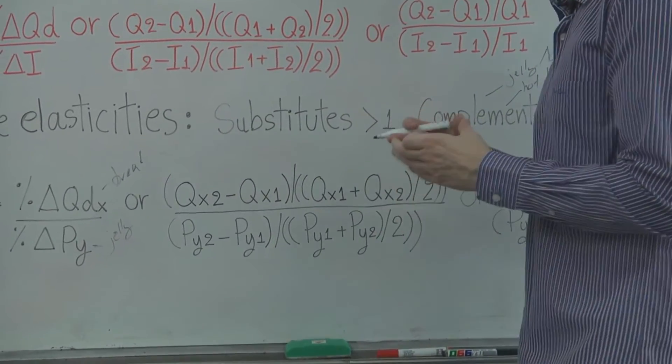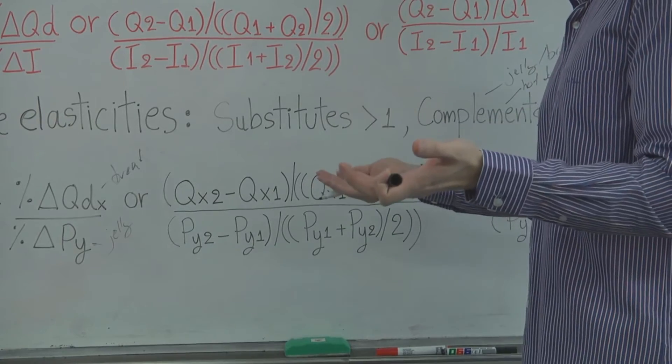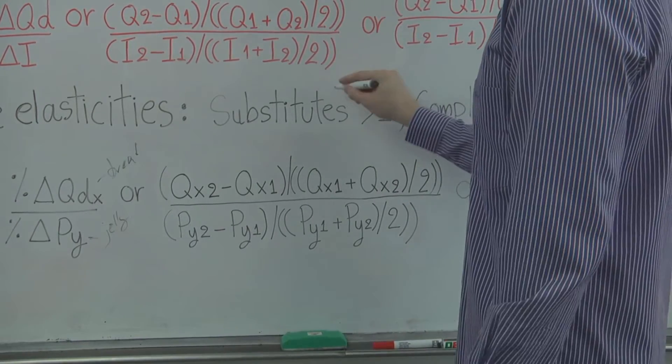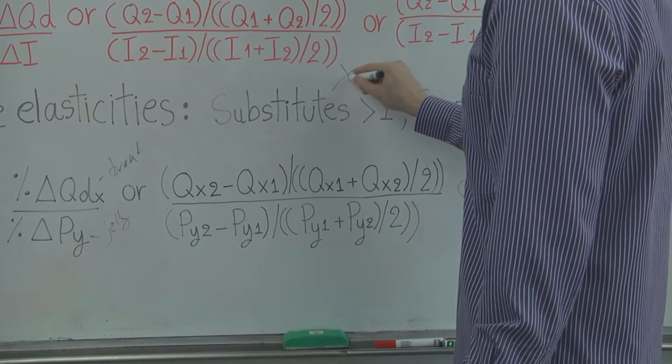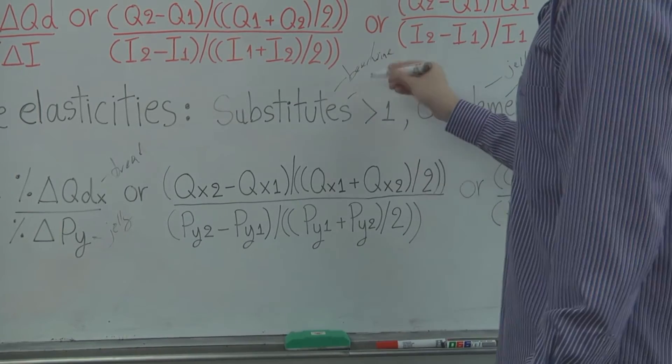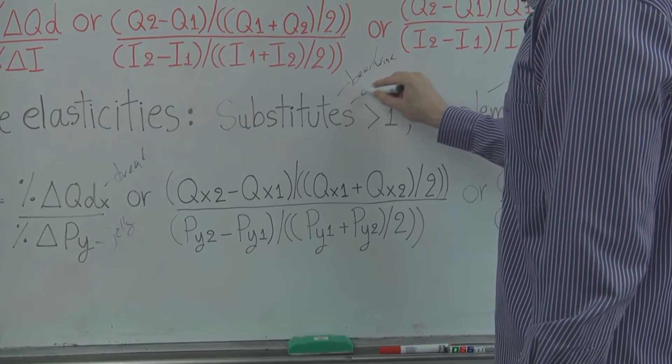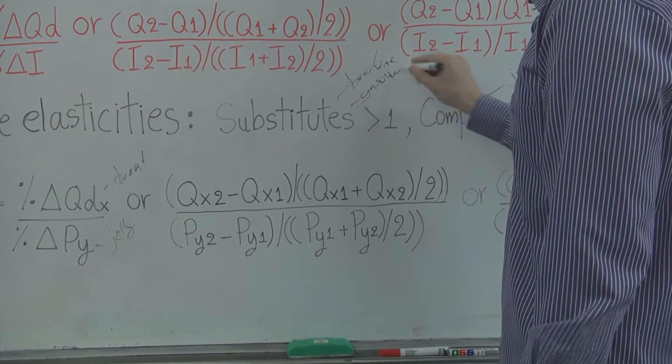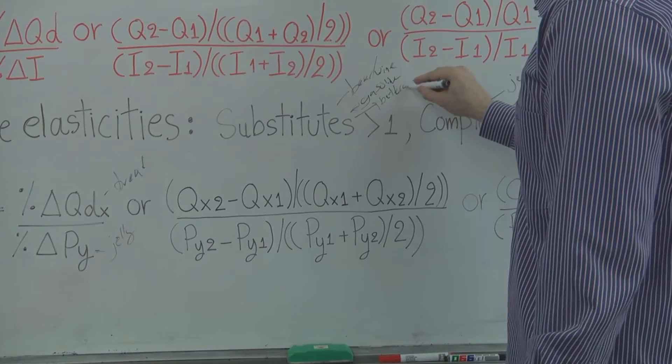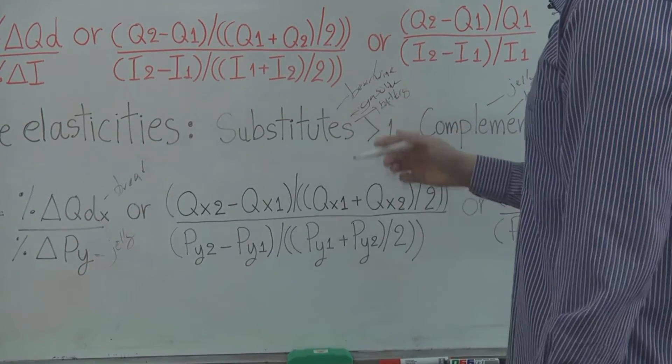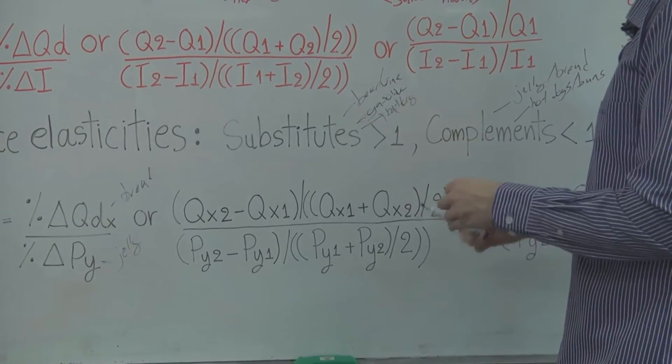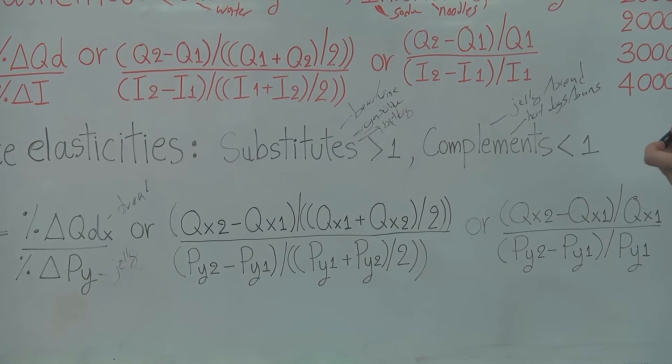If a substitute would be, if the price of something goes up, you'll buy more of the other item. So we could have maybe beer and wine might be some form of substitute. We could have gasoline and battery cars, battery operated cars. So if the price of gasoline goes up, the demand for battery operated cars would also go up. They would be substitutes. And here's our similar formula for that as well.